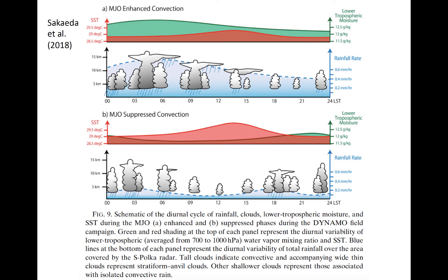The diurnal cycle of precipitation and clouds are shown here for over-tropical oceans during large-scale conditions that are convectively active in the top panel and convectively inhibited in the bottom panel. The blue dashed lines in either panel denote the rain rate as a function of local time of day shown on the x-axis. In the deep tropics, daytime is typically 6 a.m. to 6 p.m. The green shading indicates the magnitude of low tropospheric humidity, labeled on the rightmost y-axis, and the red shaded region indicates the magnitude of SST, or sea surface temperature, which varies between 28.5 and 29.5 degrees C in the schematic.